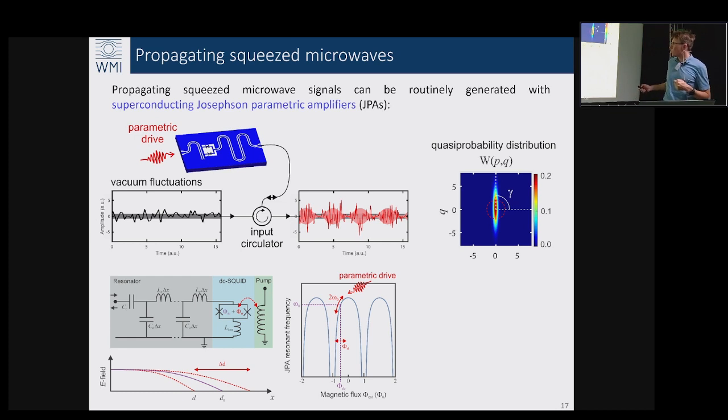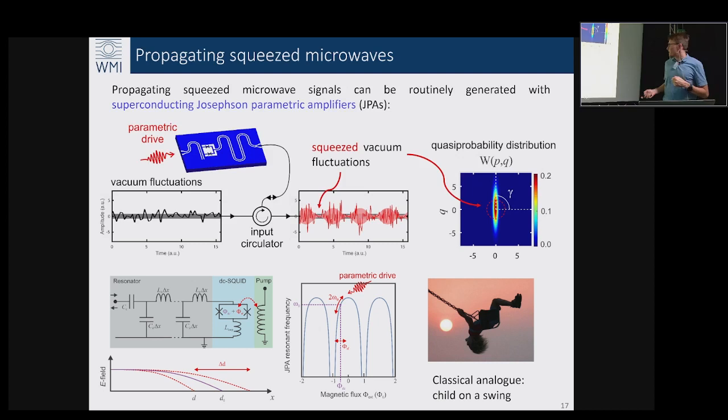What we can do is apply a parametric drive and use this device effectively as a phase sensitive amplifier. The vacuum fluctuations go in, they are phase sensitively amplified at certain quadratures and then deamplified at another quadrature so that we can squeeze the incident fluctuations even below the fundamental quantum limit, as shown by the experimental tomography of the Wigner function in the phase space covered by the quadratures P and Q.